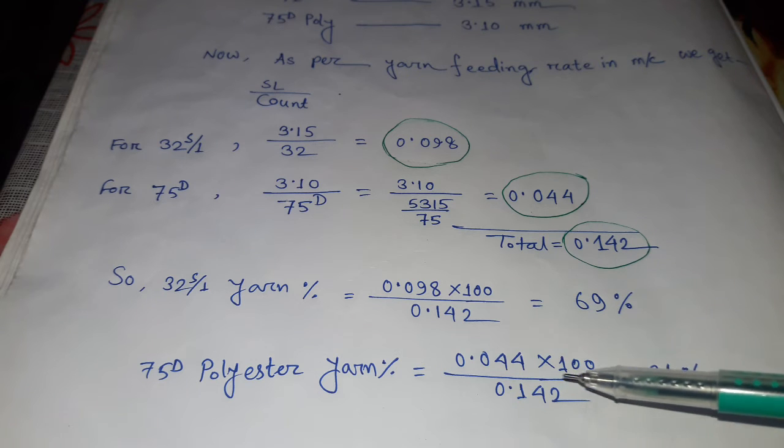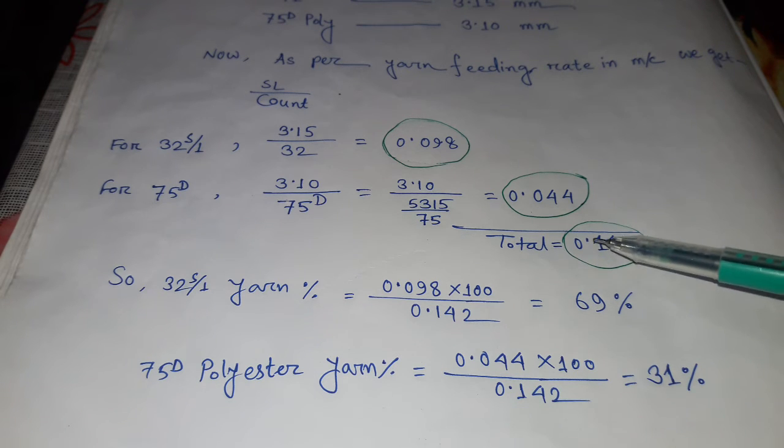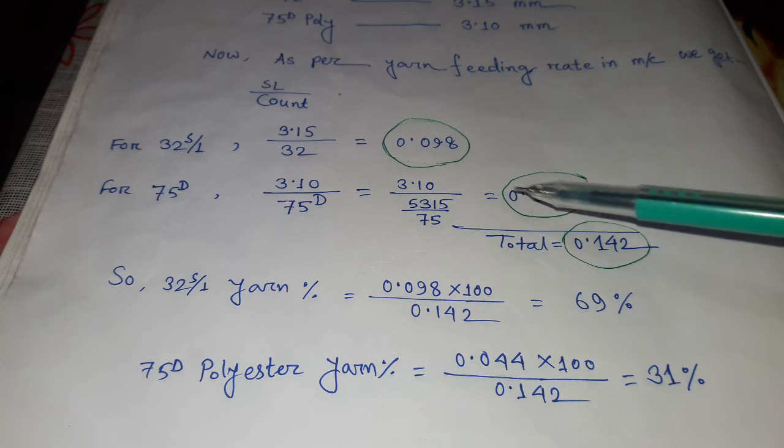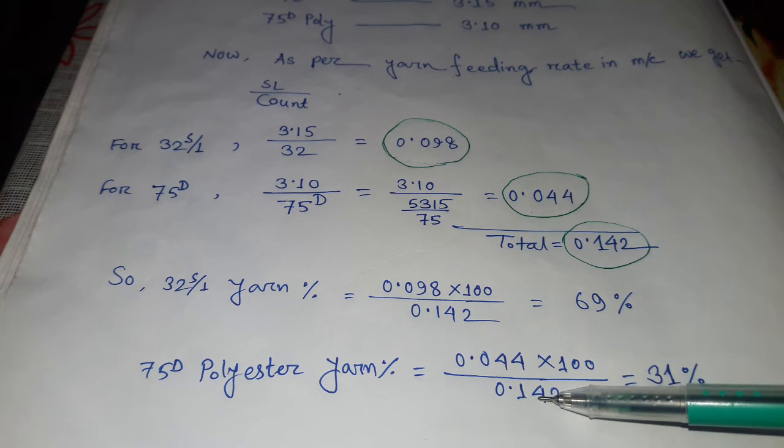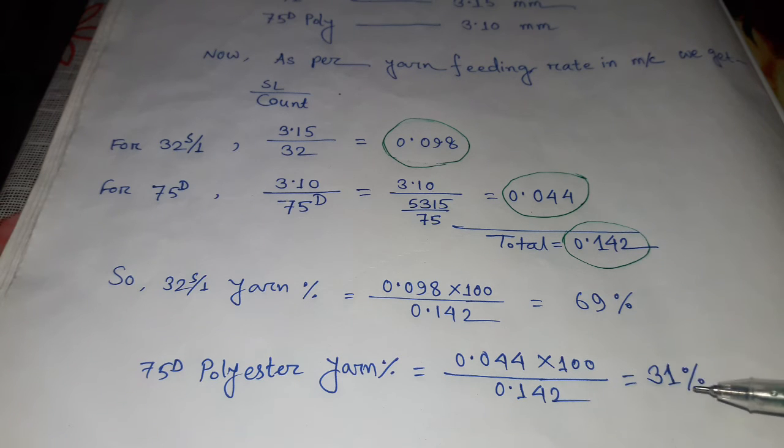How many percent is divided by total ratio of both values, 0.142. Then after calculation we get 31 percentage.